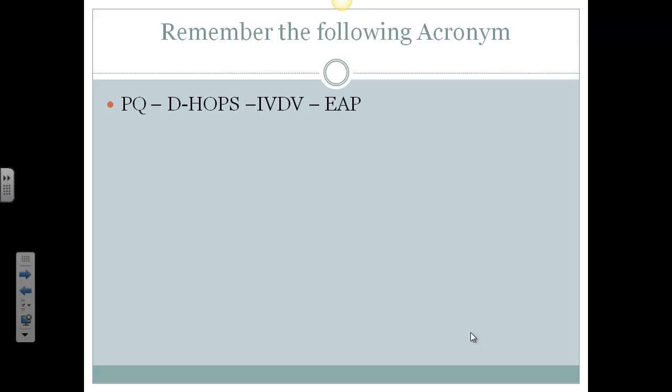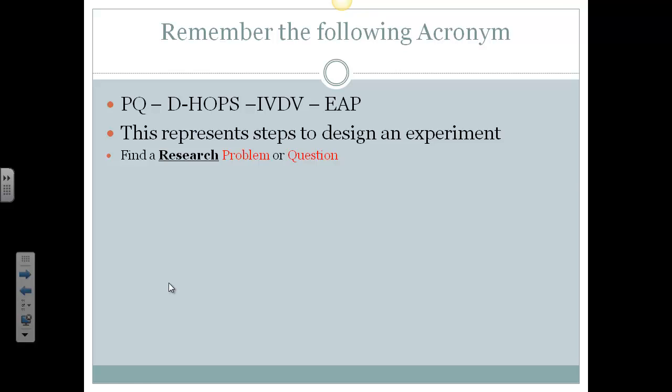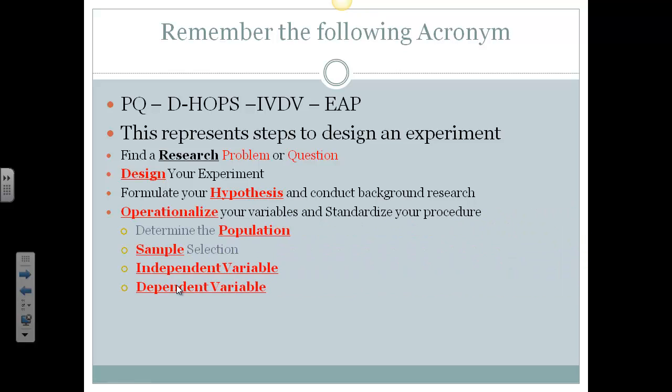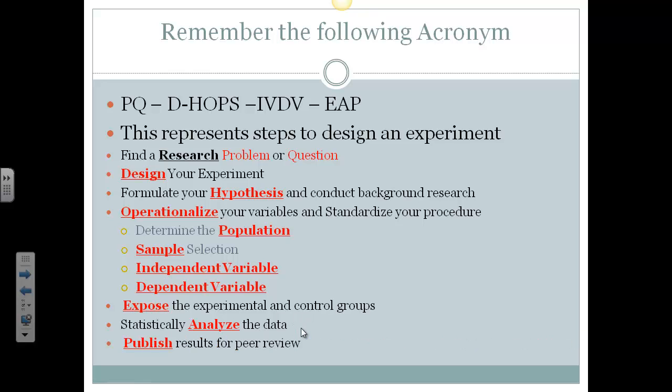And remember the following acronym when we're trying to design a test. PQ, DHOPs, IVDV, and EEP. So this is kind of the method to set up an experiment. So our PQ is find a research problem or question, design your experiment, form your hypothesis, operationalize your variables and operationalize your population and sample, what was the procedure you used. Operationalize your independent and dependent variables, how will you measure and manipulate. And then expose the subjects to the independent variable. And then analyze, like we've talked about today, and then publish. So PQ, DHOPs, EVDV, EEP, basic method to design an experiment.